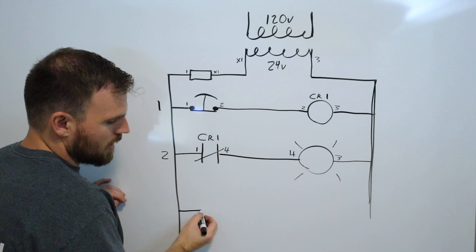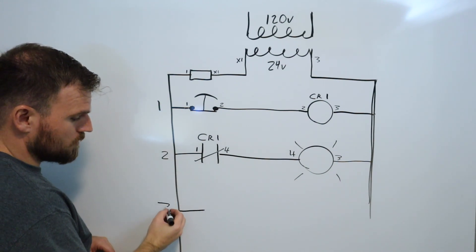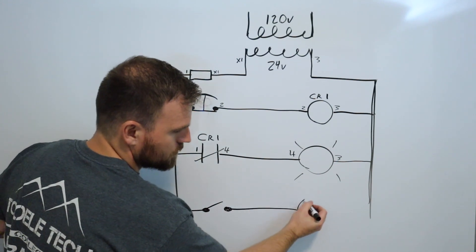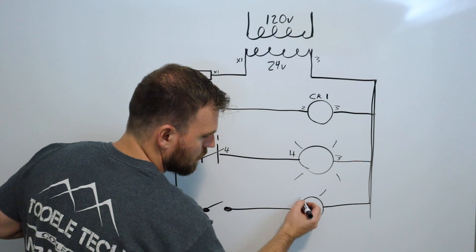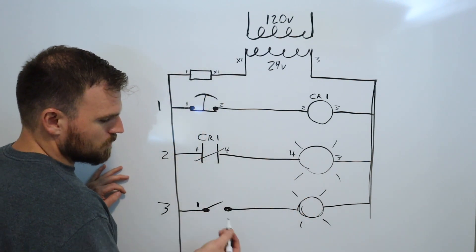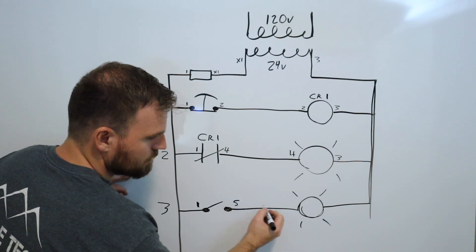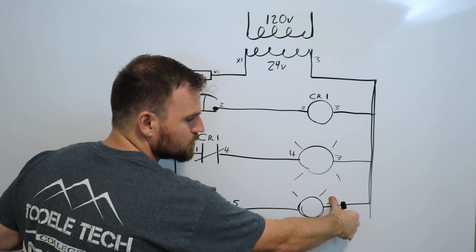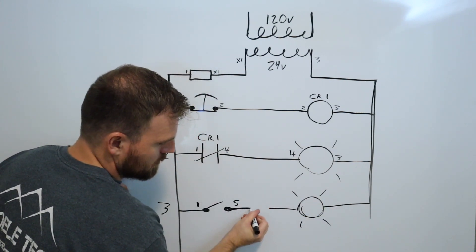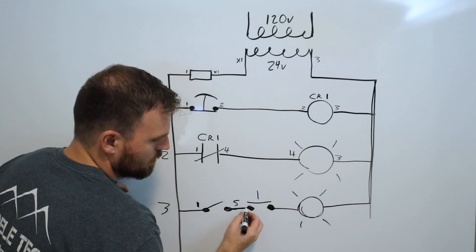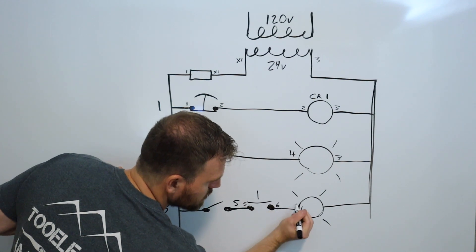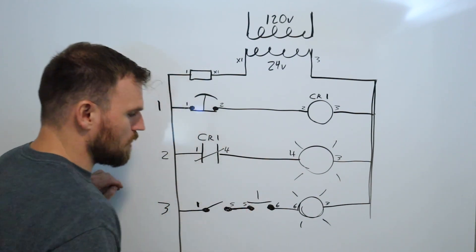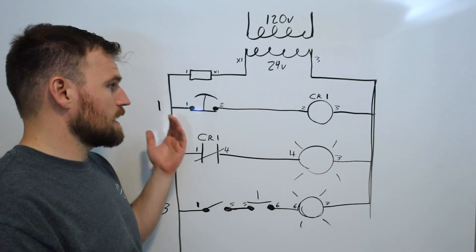Rung three can have another push button going to another light. Wire one comes in, passes through the push button and becomes wire five, then connects to the light and returns as wire three. If you add a second switch for an AND circuit in that same rung, wire five enters the second switch and exits as wire six, then connects to the output and returns as wire three. Multiple components just mean more wire numbers.